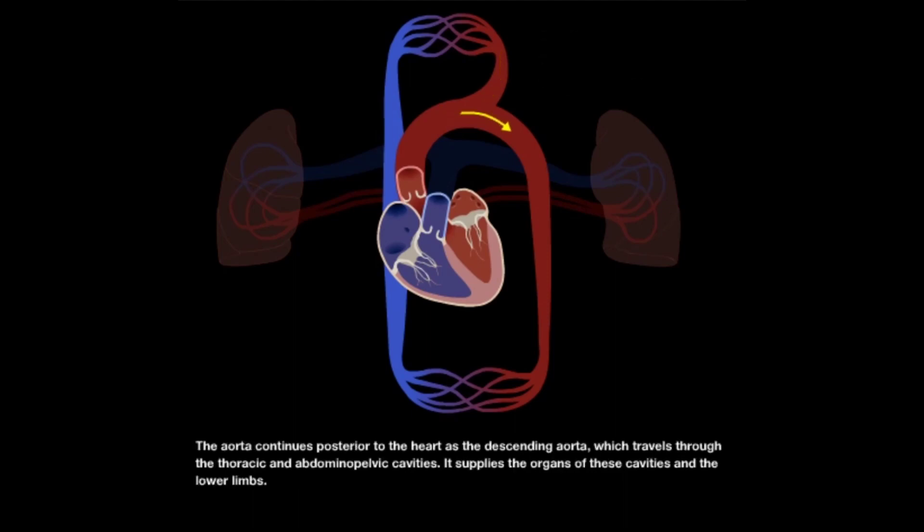The aorta continues posterior to the heart as the descending aorta, which travels through the thoracic and abdominal pelvic cavities. It supplies the organs of these cavities and the lower limbs.